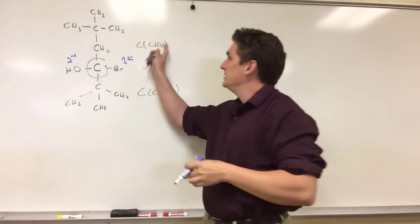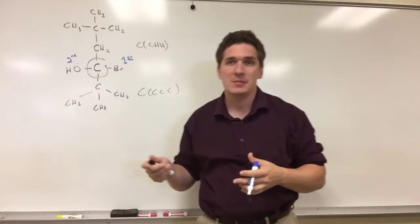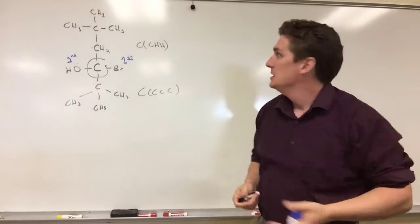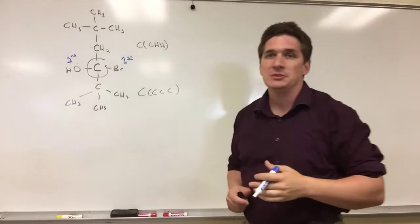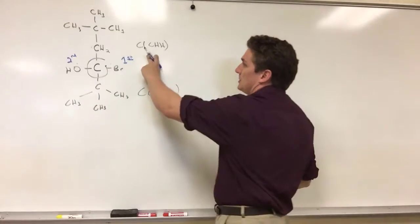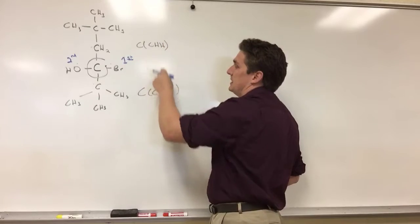So we're going to rank the nearest bonded neighbors by their atomic numbers. So we've got a carbon, hydrogen, hydrogen, carbon, carbon, carbon. What we want to do is we need to look at the first difference. So these two carbons are equivalent. This is a hydrogen. This is a carbon.